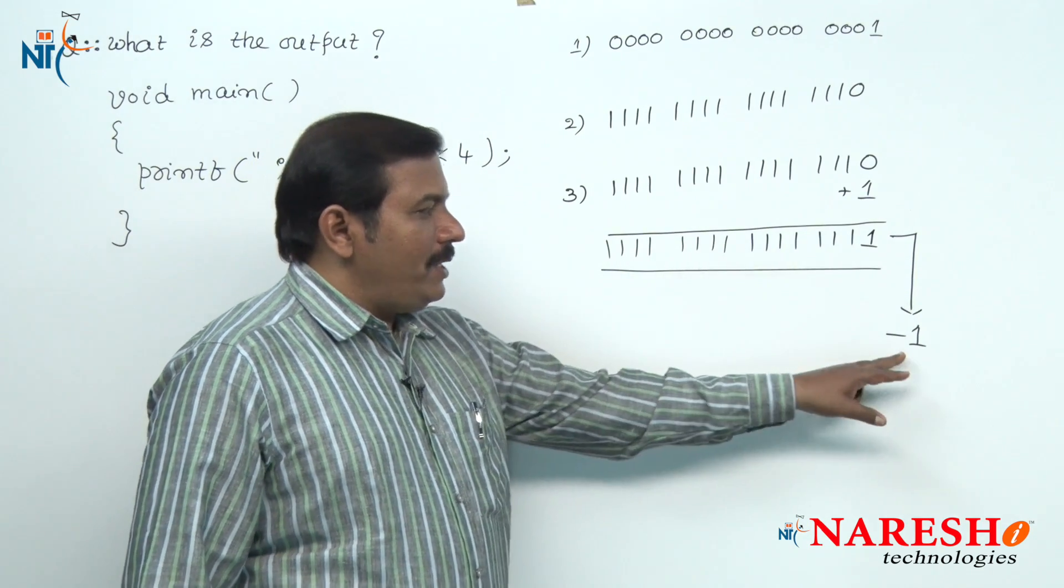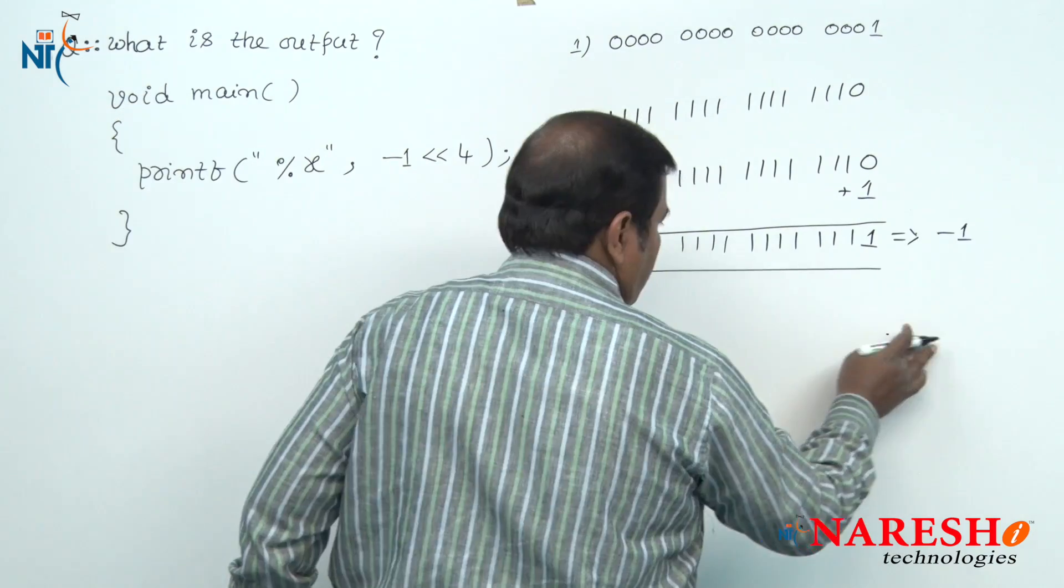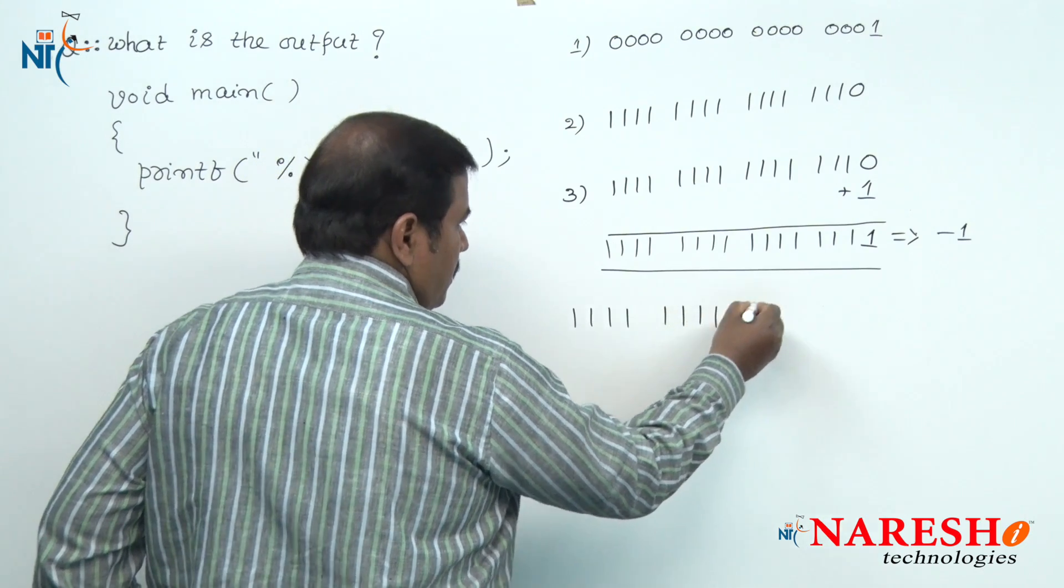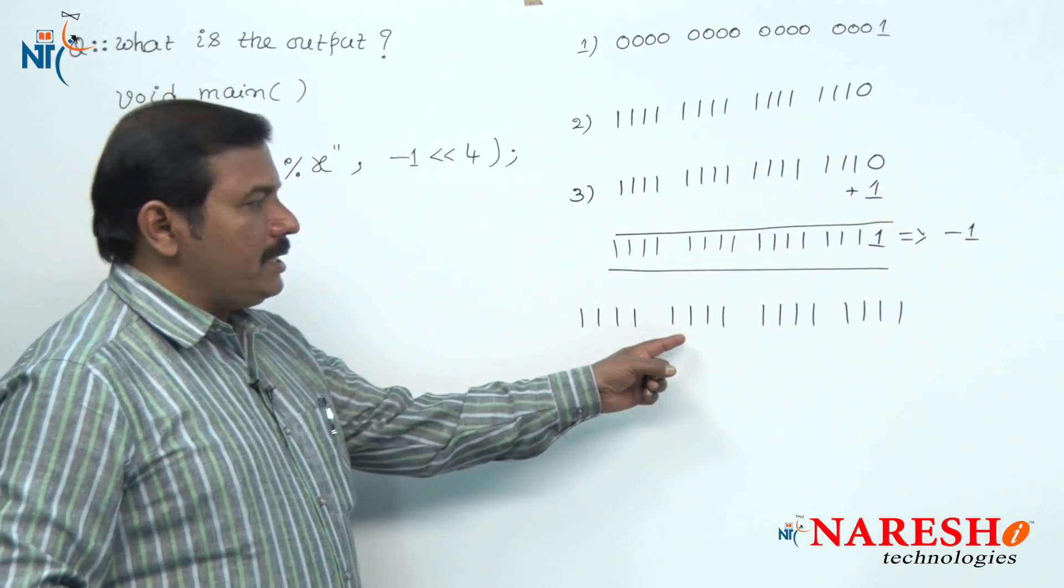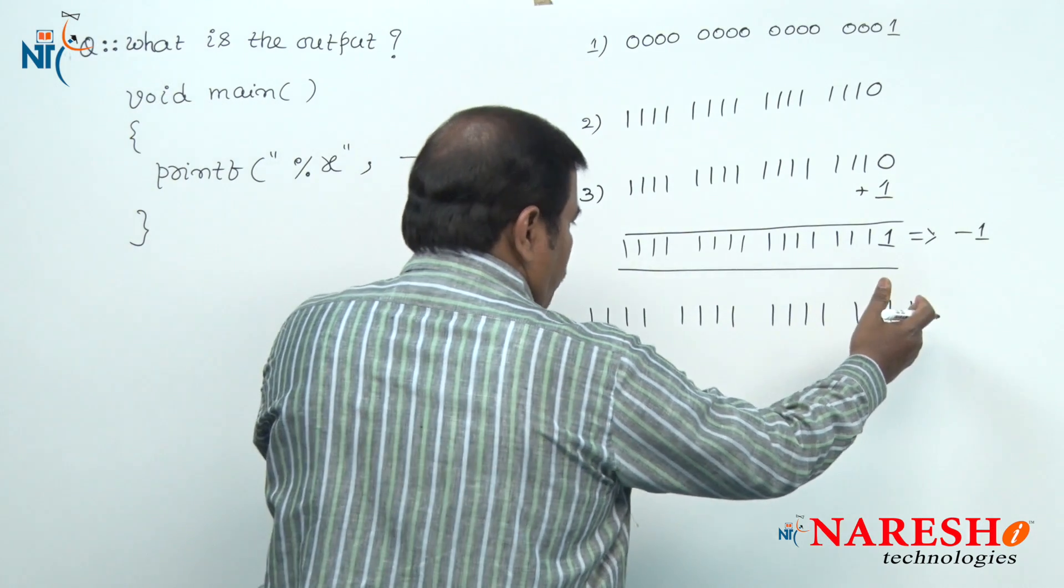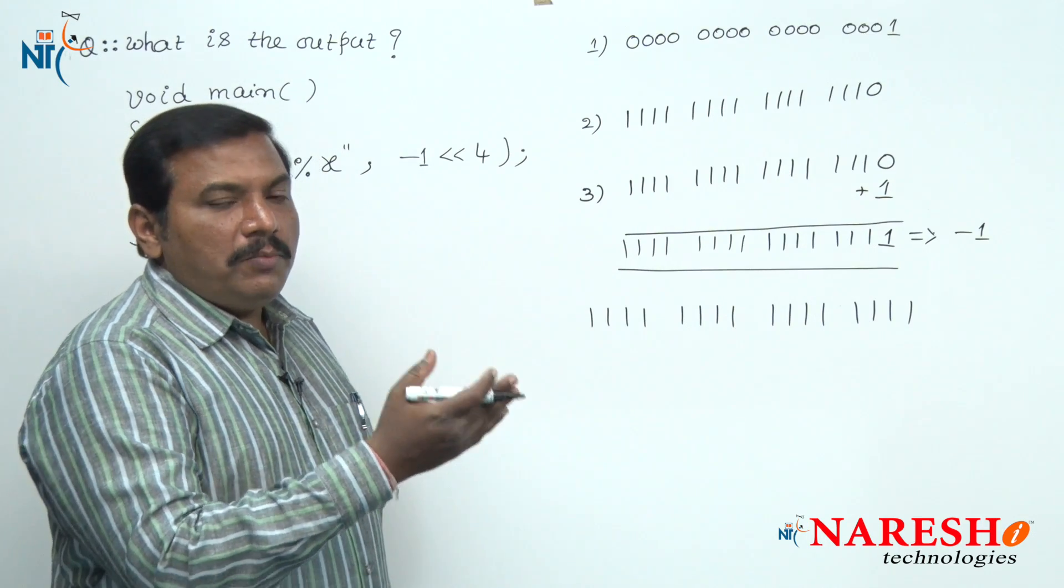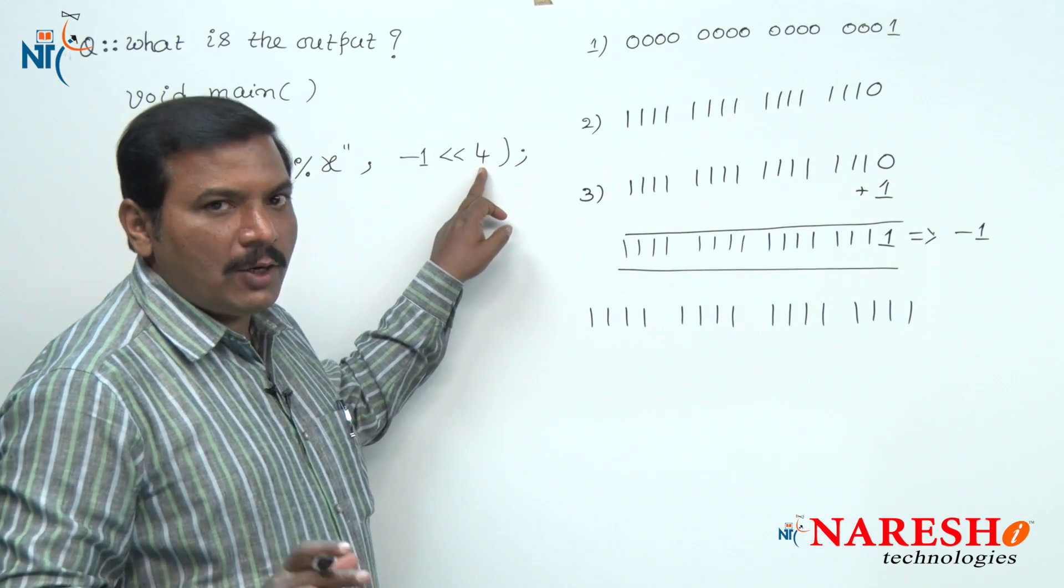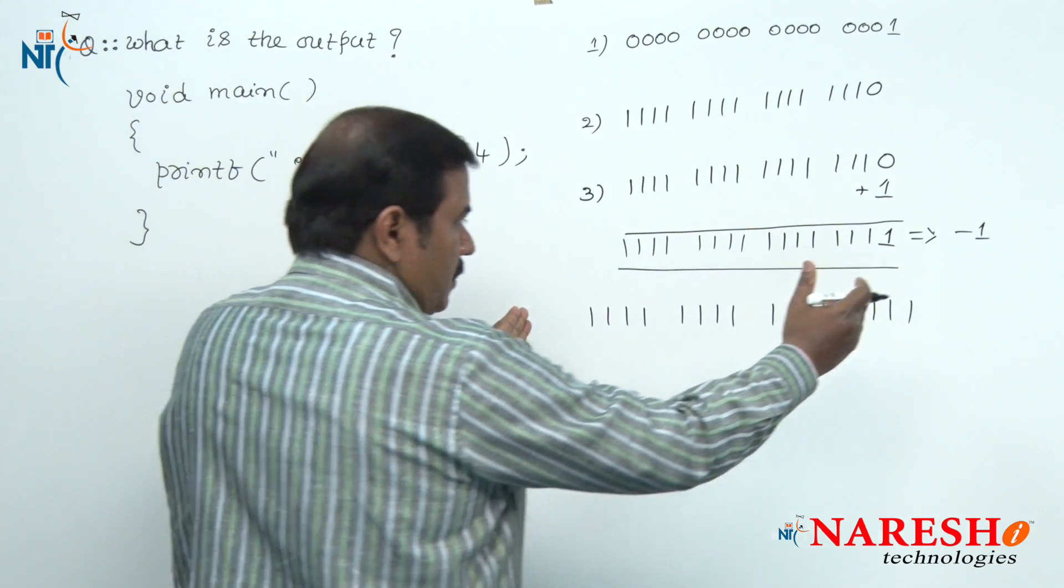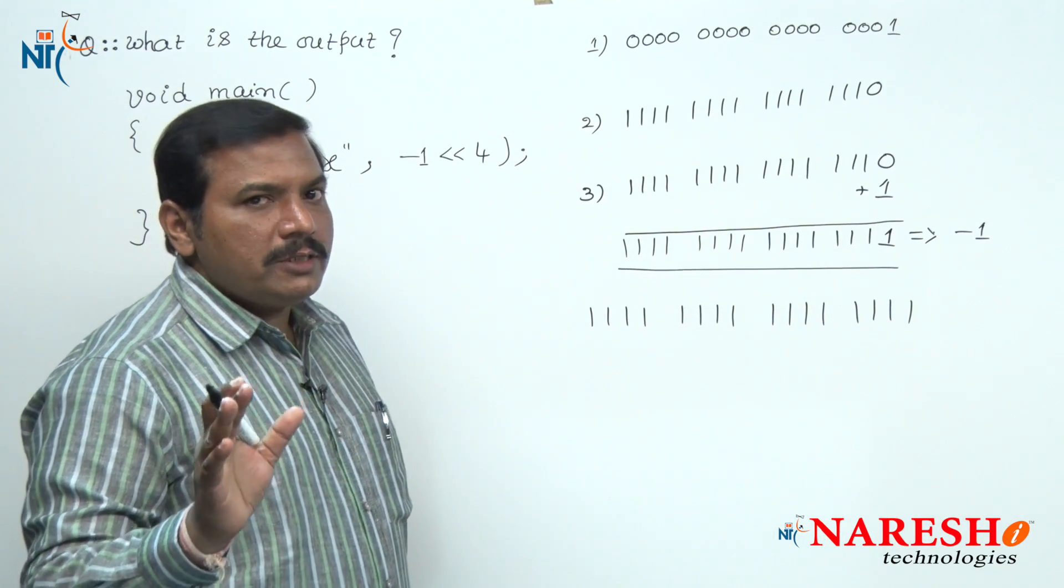On this 2's complement of minus 1 apply left shift operator. Once again I am writing the 2's complement of minus 1. On this 2's complement of minus 1 apply this left shift operator. In the case of left shift, all these 16 bits are shifted by 4 positions because here the second operand is 4. Hence the left shift operator shifts all these 16 bits of minus 1 by 4 positions left.